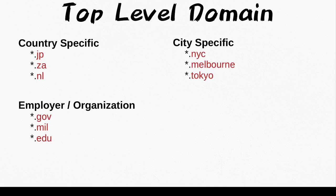Finally, there are also organizational-specific TLDs that might assist in determining a target's employer or field of work. A target's association with a TLD like .gov or .mil should be rather obvious, though .edu might be a little more ambiguous, as they could be either an employee of a school or a current or past student. Now that we've mapped out all the information from an email's different sections, we can move on to the next phase of the email methodology, which will cover different email-related tools and searches.